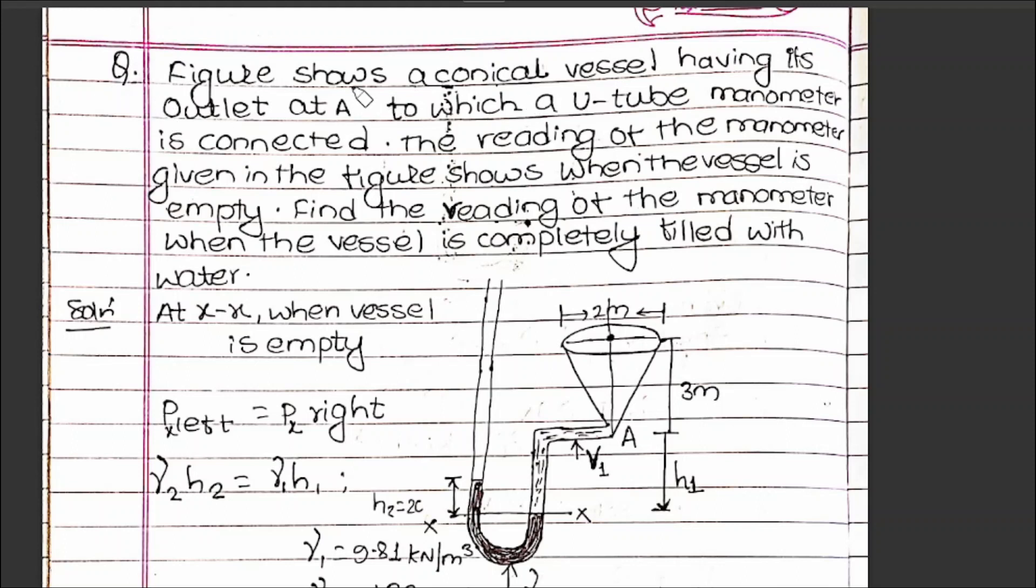Question of Figure: A conical vessel having its outlet at point A to which a U-tube manometer is connected. The reading of the manometer given in the figure shows when the vessel is empty. Find the reading of the manometer when the vessel is completely filled with water.